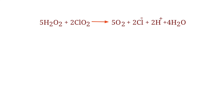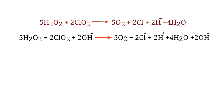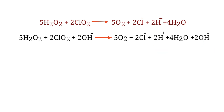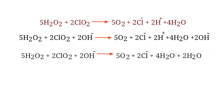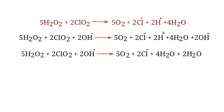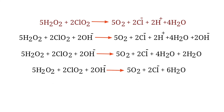For a reaction in a basic medium, add one OH⁻ to each side for every H⁺ present in the equation. The OH⁻ must be added to both sides to keep charge and atoms balanced. Combine OH⁻ and H⁺ that are on the same side to form water. Therefore: 5H₂O₂ + 2ClO₂ + 2OH⁻ → 5O₂ + 2Cl⁻ + 6H₂O.